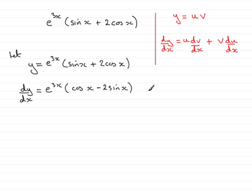Then we have plus and then it is v times du dx. So v was the bracket, so just put that in there, sine x plus 2 cos x. And then we need to multiply this by du dx. So that's to differentiate e to the 3x with respect to x.